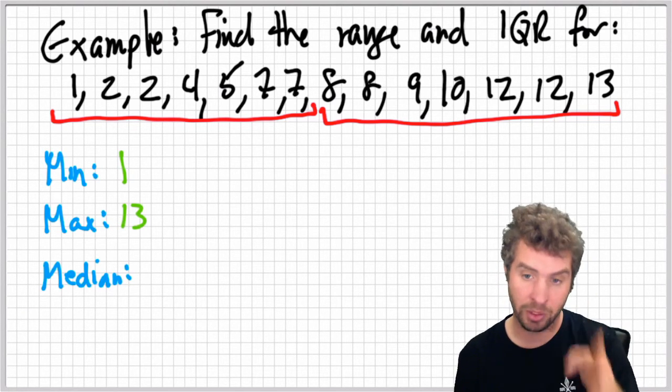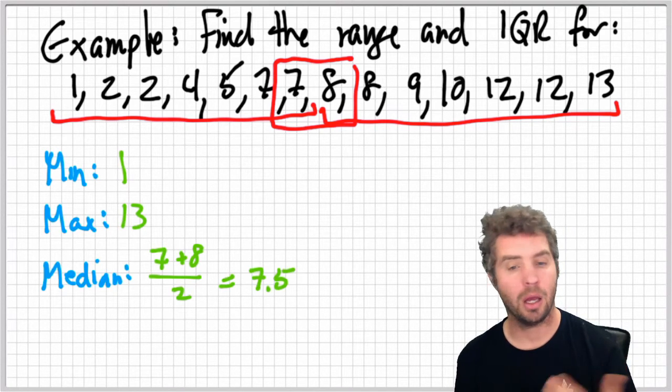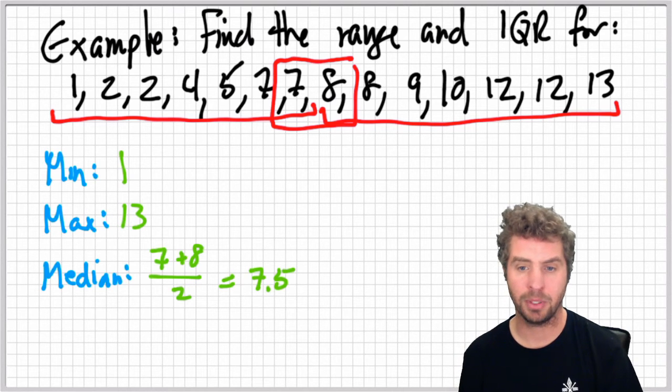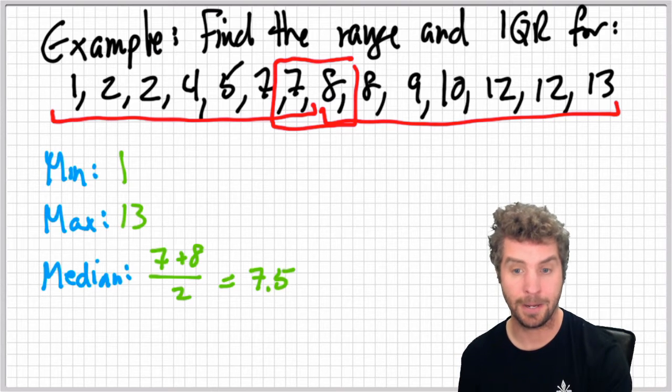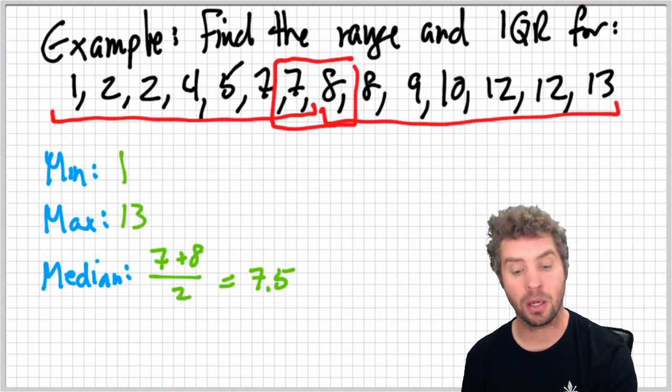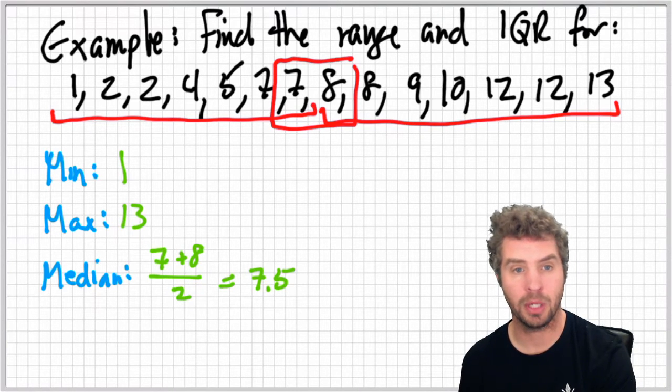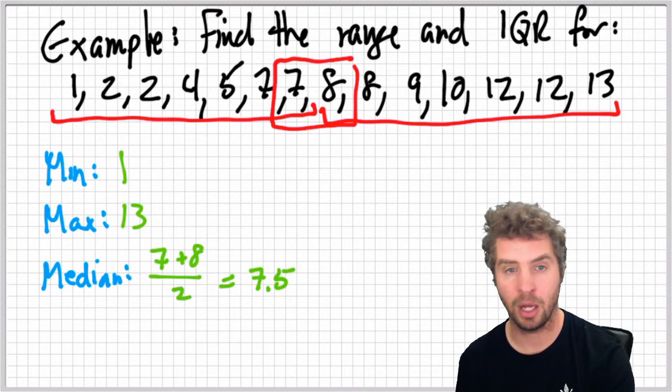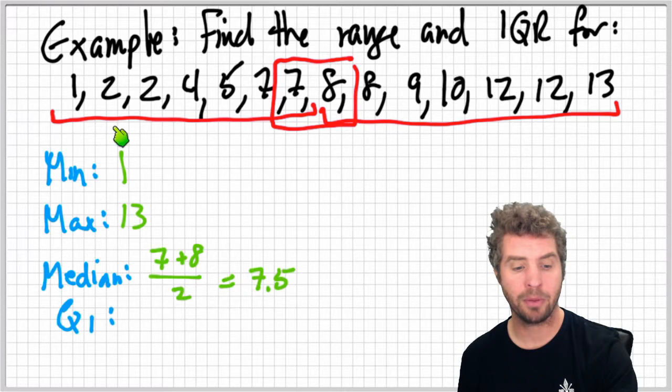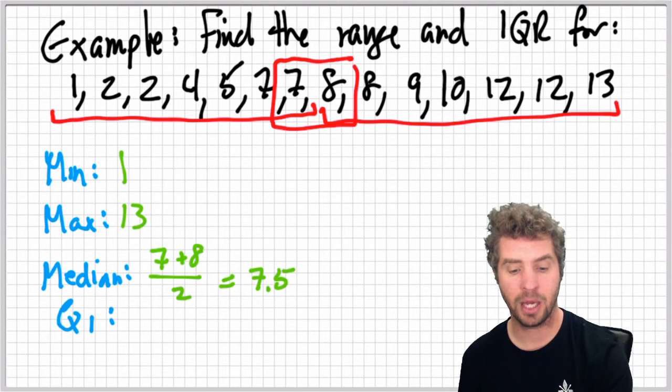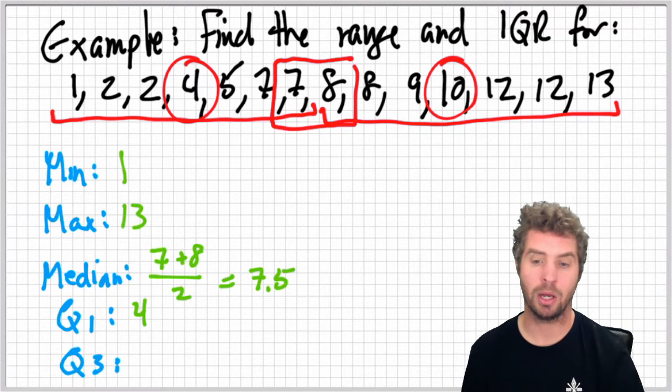But as it is, we have to find what's directly between seven and eight, and so we can do that by averaging them. This one's probably an easy example, but seven plus eight divided by two is seven and a half, which of course is directly between seven and eight. Now, the quartiles are a little bit easier because each half of this data has an odd number of values. So we can just take the middle of the bottom half, the lower half of the data. The middle number is four, nice and easy, and the middle of the top is ten. So that's quartile three.